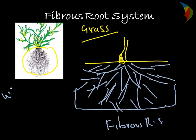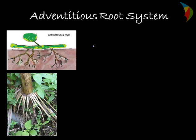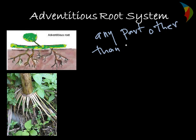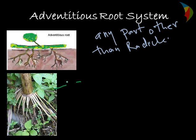In the case of wheat, maize, and all monocot plants, we have this type of fibrous root system. The third type of root system is called the adventitious root system. These are special types of roots which arise from a part of the plant other than the radicle — they arise from any other part of the plant. In the case of sugarcane and maize, we have prop roots, and the main function of these roots is to support the plant.